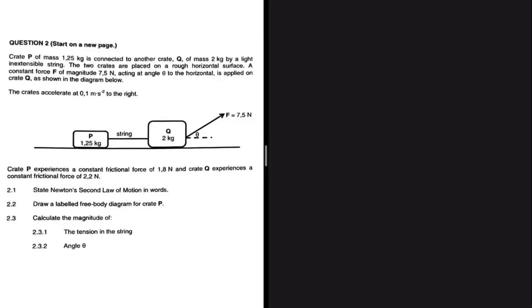Crate P of mass 1.25 kg is connected to another crate Q of mass 2 kg by a light string. The two crates are placed on a rough horizontal surface, so we know there's some friction there. A constant force F of magnitude 7.5 newtons acting at angle theta to the horizontal is applied on crate Q.